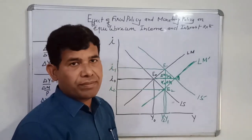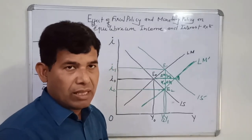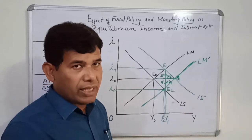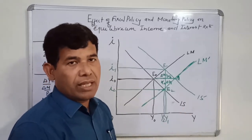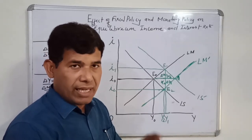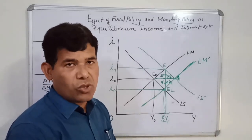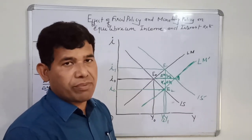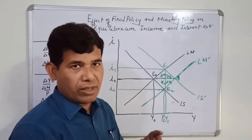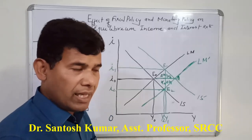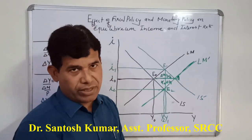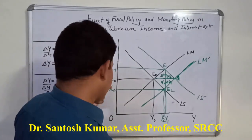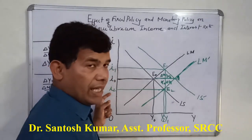If money supply rises, what will happen? In the money market — recall the money market diagram where we have a vertical money supply line and a downward sloping money demand line — in that situation, when money supply rises, the rate of interest falls. Because the intersection of money demand and money supply lines happens at a lower level of interest rate. When money supply rises, rate of interest falls from I0 to I2.